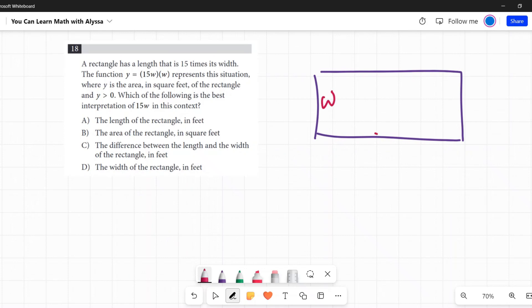It has a length that is 15 times its width. So this is my width and this is going to be my length. The function y equals 15w times w represents this situation. So they're saying w and 15 times w. Clearly we're using w to represent the width. And since the length is 15 times longer, calling it 15w.